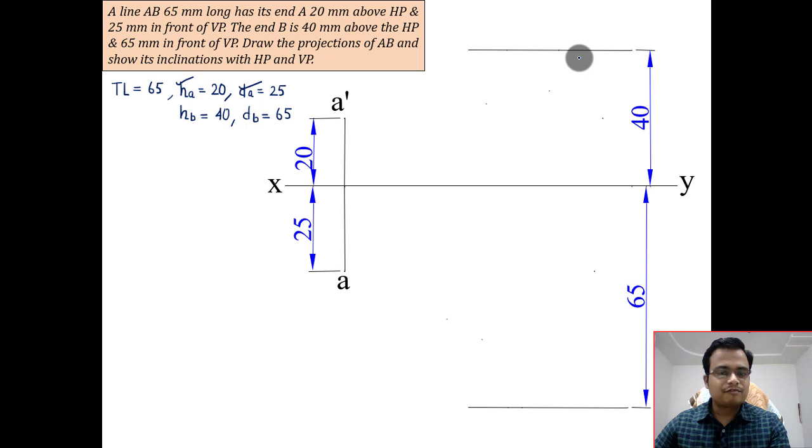Somewhere along this line we'll have endpoint B1 dash and somewhere along this line we'll have endpoint B2. Now with A dash as the center and with radius of 65, cut an arc over here. This arc has a radius of 65 and center as A dash.